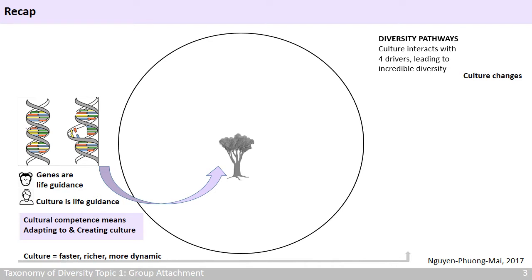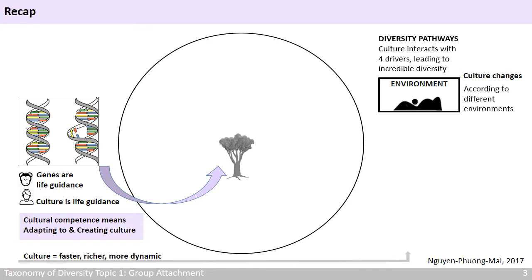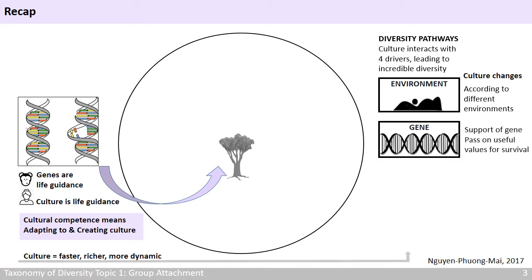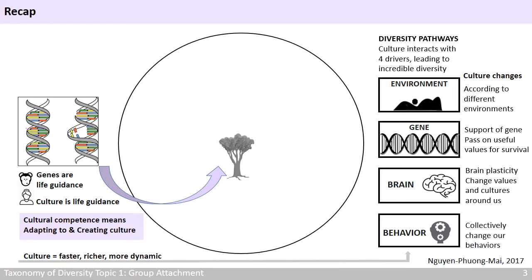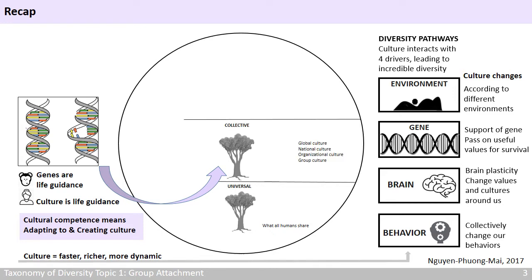Culture changes according to different geographical environments. Culture changes with the support of genes, to pass on the most useful values for our survival. Culture changes because the brain has some flexibility to let us change our own values and the cultures around us. And finally, culture changes if we collectively change our behaviors. This interaction occurs at all levels — from the universal level where we are all the same, to the collective level with many cultures, and the individual level where each of us is unique, and where we mostly communicate and do business. To understand a culture, we need to look at the specific context and go beyond cultural stereotypes, such as applying individual incidents to judge the whole culture, or using oversimplified beliefs to judge a unique individual.